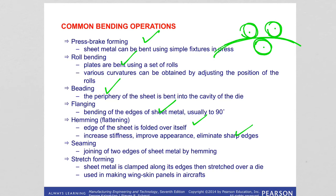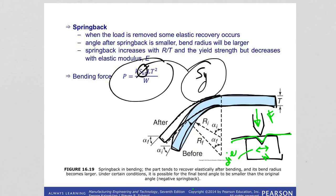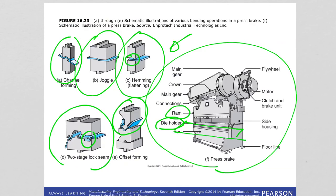Seaming is the joining of two edges of sheet metal by hemming, as you can see in the example here where we are joining two different sheet metals.